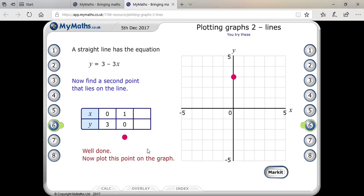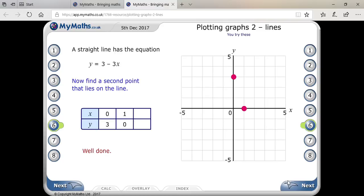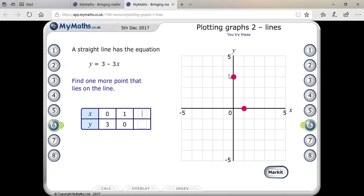That's right, so 1 comma 0. 1 is over here and 0 means you don't have to move on the y-axis. Mark it, yes. Now try to plug in the third point. Two points are here and here; maybe the third point would be here or here. You can plug in x equals 3.